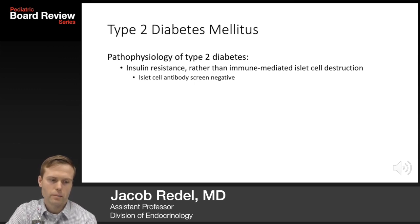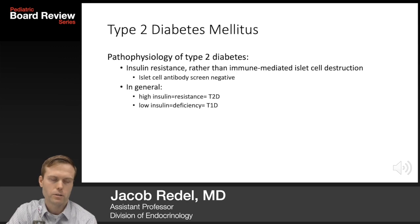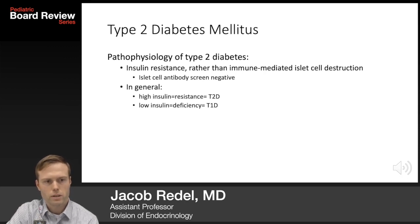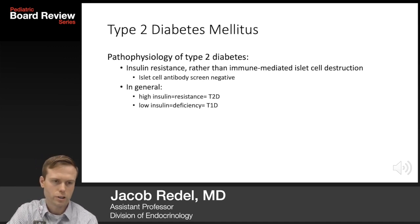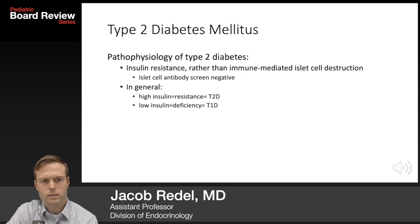In type 2 diabetes, at diagnosis, the islet cell antibody screen should always be negative. When diagnosing type 2 diabetes on the boards, type 2 diabetes will present with high levels of insulin, indicating insulin resistance, as opposed to low levels of insulin indicating deficiency, as seen in type 1 diabetes. There can be some overlap with beta cell exhaustion in type 2 diabetes, but for testing purposes, high insulin indicates resistance in type 2.